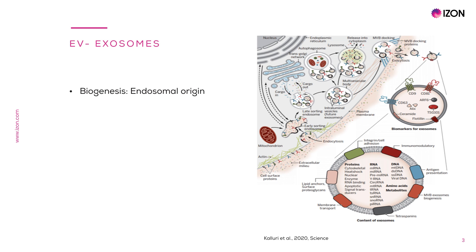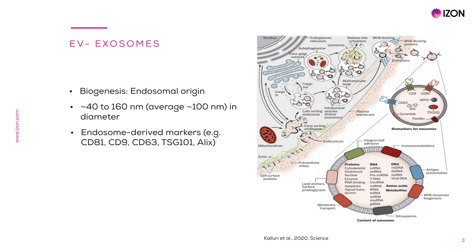The most studied EV type is exosomes. Exosomes have a defined biogenesis mechanism: they form by inward budding of the limiting membrane of early endosomes, which mature into multivesicular bodies and are secreted when these compartments fuse with the plasma membrane and contents get released into the extracellular space. Exosomes are typically less than 160 nanometers in diameter and as small as 40 nanometers. Because of this defined biogenesis mechanism, exosomes are enriched in endosome-derived markers that can be used to validate the presence of this EV type in a sample.